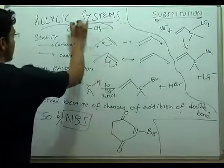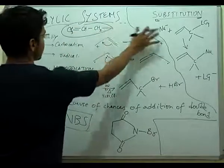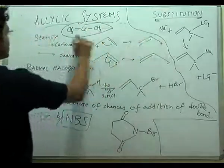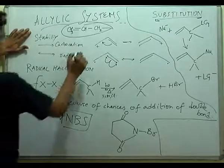This is called an allylic group. If it is attached to any big system then we call it an allylic system. Now we will see its stability.